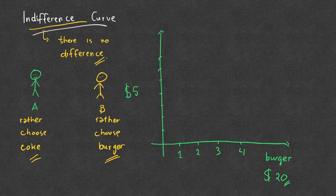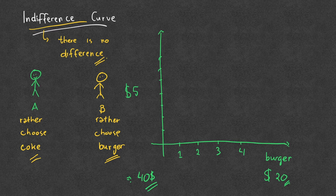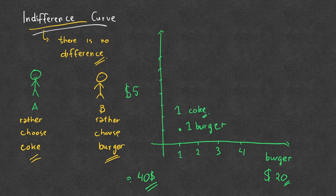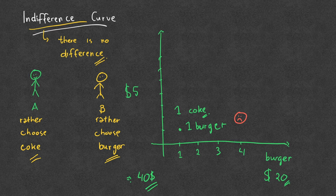You're willing to consume within your budget of forty dollars. You cannot consume combinations beyond that forty dollars. But you'll be less happy if you only consume, say, one burger and one Coke. You'll be a bit sad because your preference is to eat two burgers a week — how come you're only eating one?